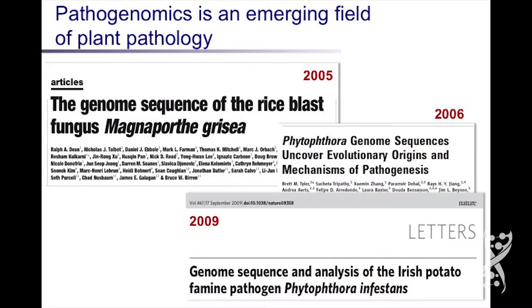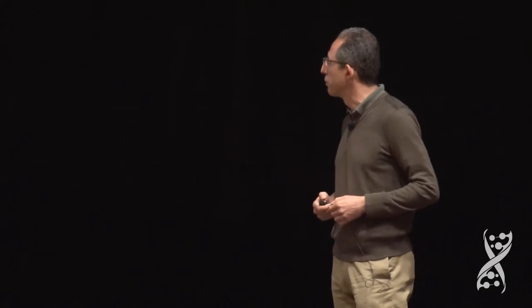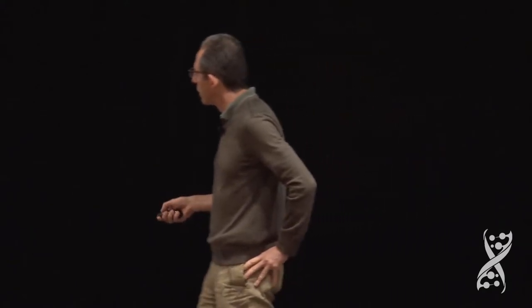Genomics started about 10 years ago in this field. The first filamentous pathogen genome was sequenced and published in 2005 — the rice blast fungus. This was followed by the project I was mentioning, the Phytophthora genomes, with the first Phytophthora genome published just a year later, again thanks to the effort of the JGI. The pathogen we care about, Phytophthora infestans, was published a few years later. So this is truly an emerging field, and we're just celebrating our 10-year anniversary. The field is in a very exciting stage.